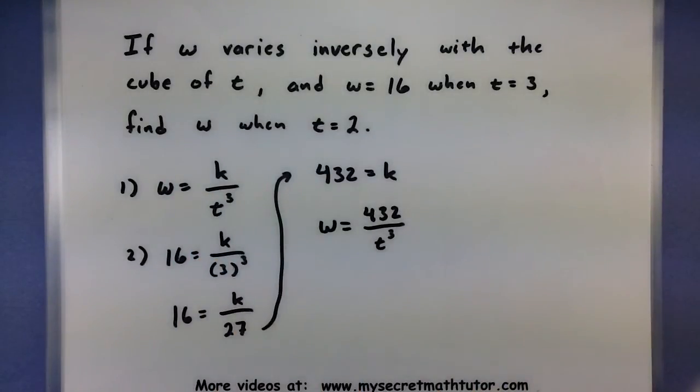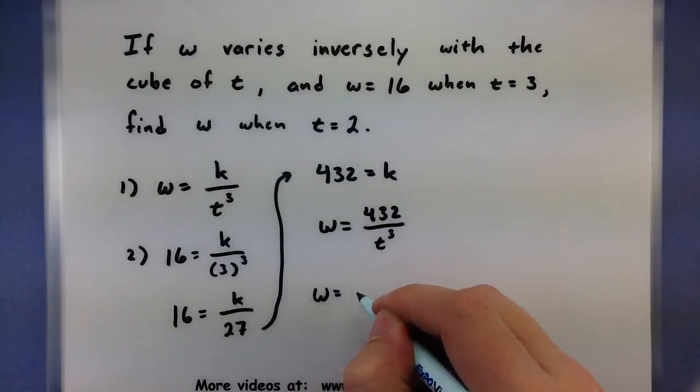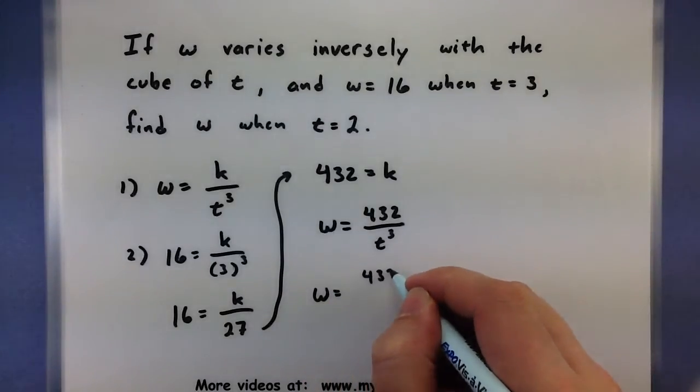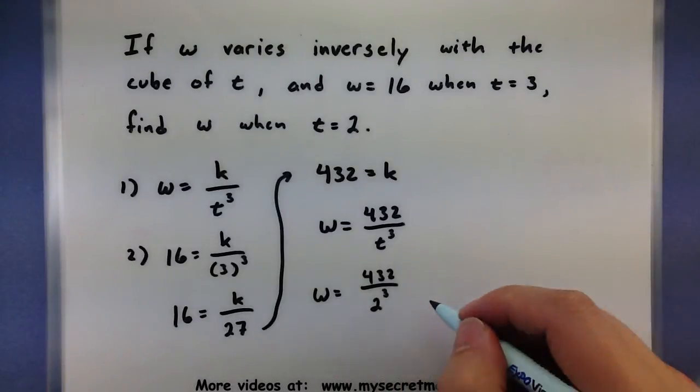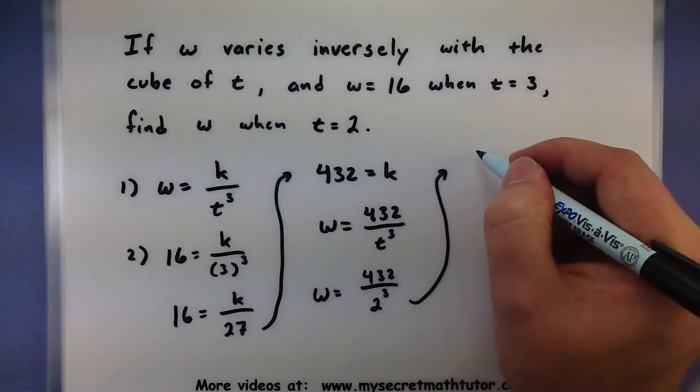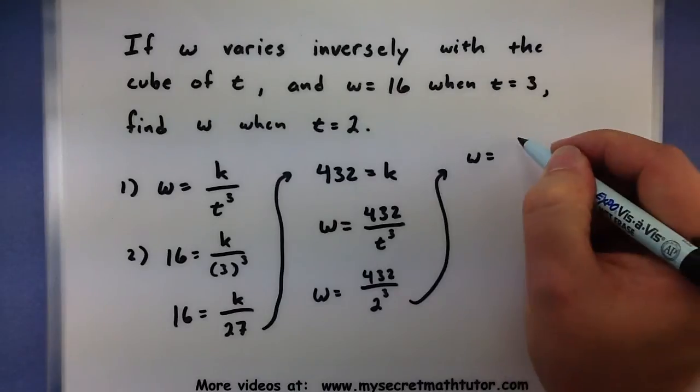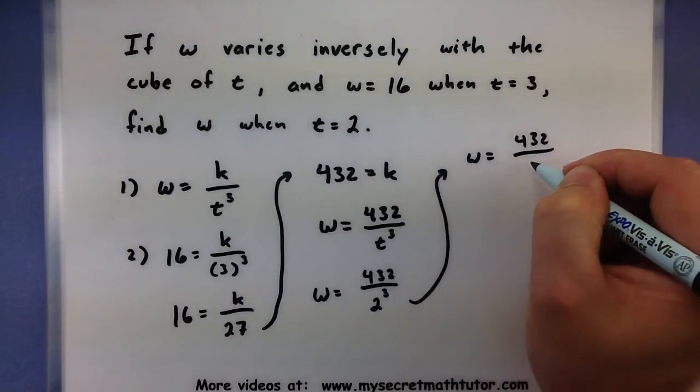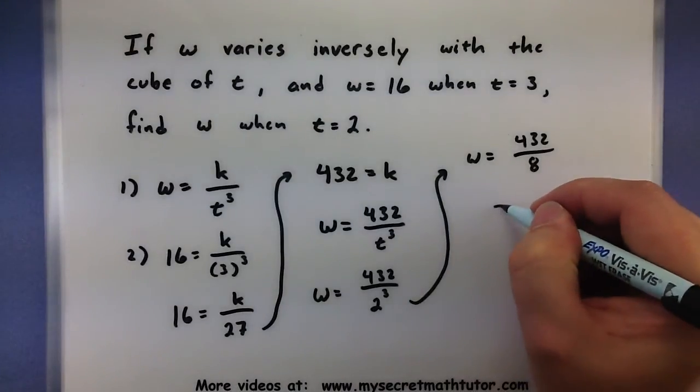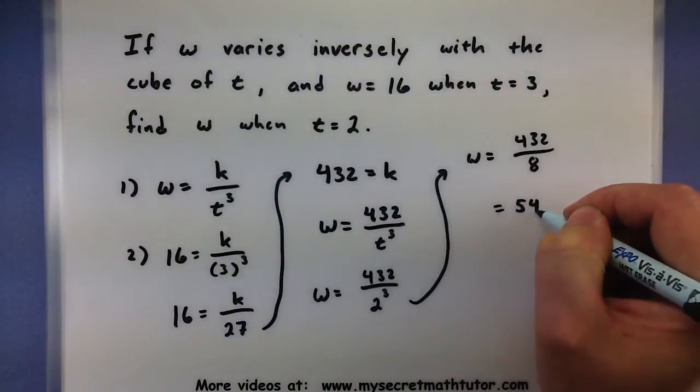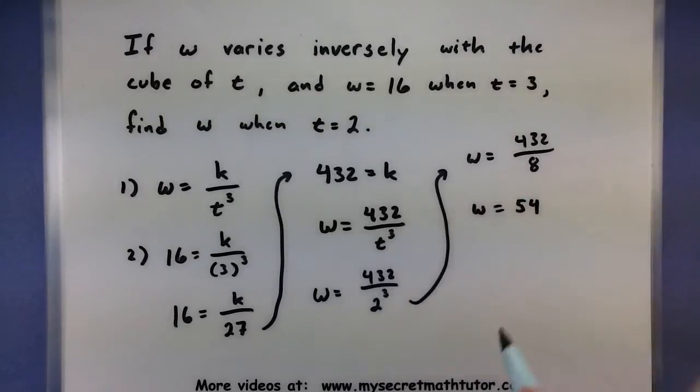So find w when t equals 2. So 2 cubed, looks like we'll be dividing 432 by 8. So 432 divided by 8 is just 54. So w equals 54, and now this one is done.